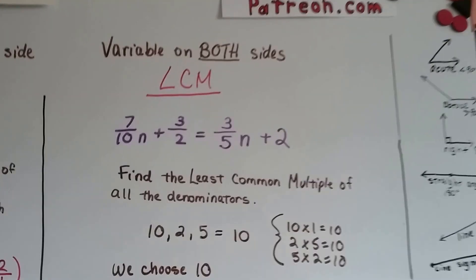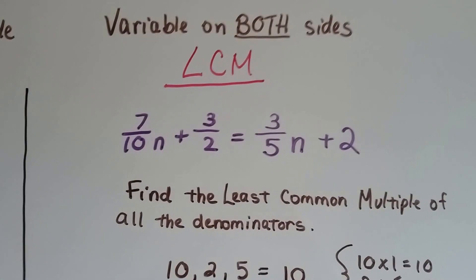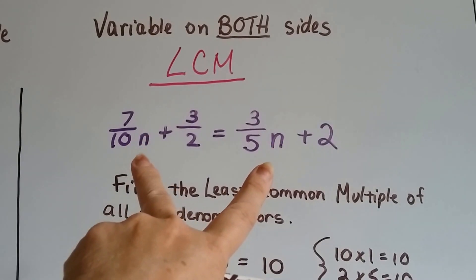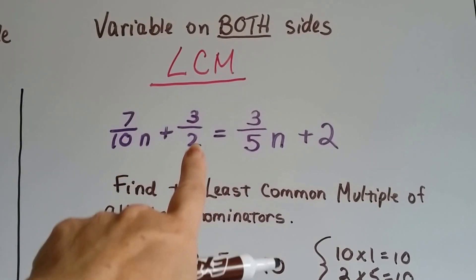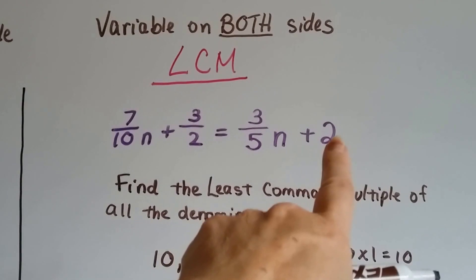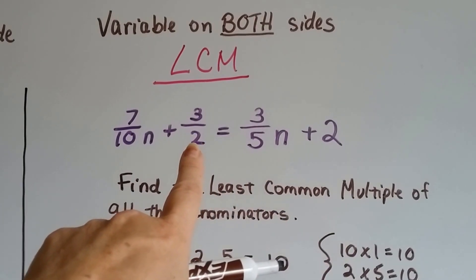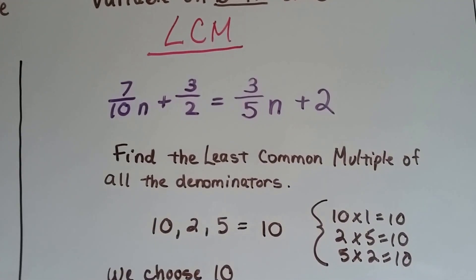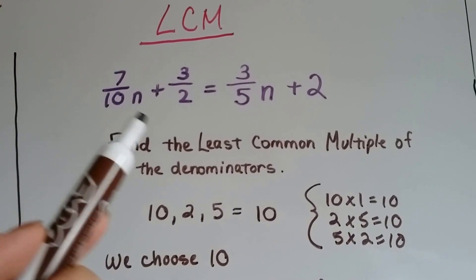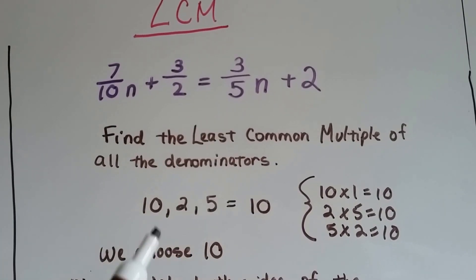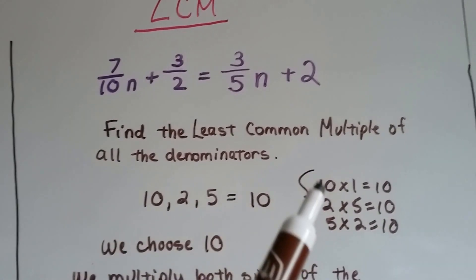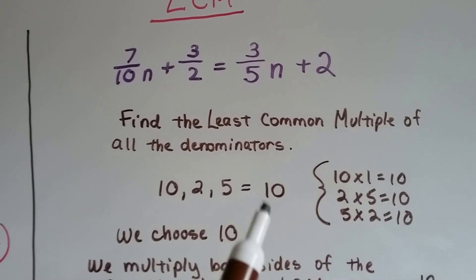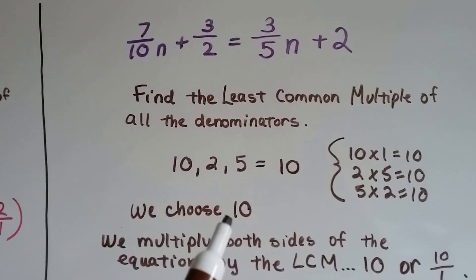Well now, we're going to use the least common multiple, because we have a variable on both sides. We have two variable coefficients. It's the same variable n. We've got a fraction here, a fraction here, and a fraction here. And we have a whole number here. And this one's an improper fraction. But we still have three fractions. We have to get rid of them. So we find the least common multiple of all the denominators. We have a 10, a 2, a 5, and the best one to choose would be 10, because 10 times 1 is 10, 2 times 5 is 10, 5 times 2 is 10. Yep, 10 is the best least common multiple to choose for all of them.